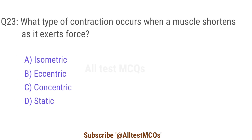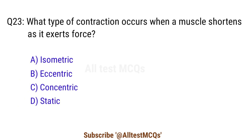Question 23. What type of contraction occurs when a muscle shortens as it exerts force? The right answer is option C. Concentric.